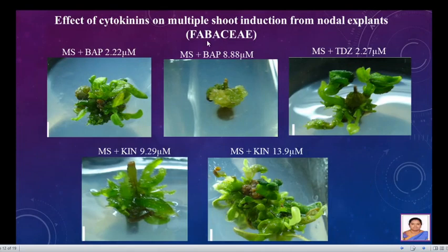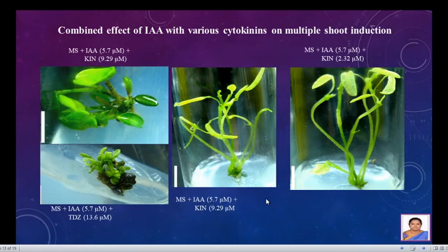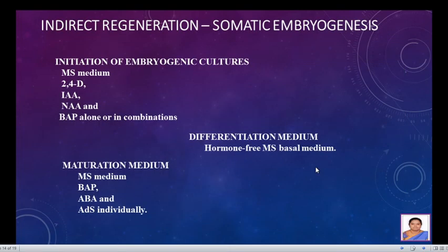One more example from the family Fabaceae. MS plus benzylaminopurine at higher concentration induces callus. TDZ induces shoots which are deformed. Kinetin produces normal multiple shoots, and kinetin at higher concentration produces a large number of multiple shoots. When IAA was combined with various cytokinins, the shoots were taller but fewer in number. These shoots were then taken for rooting.